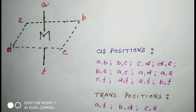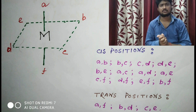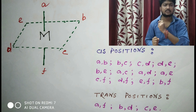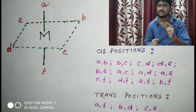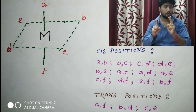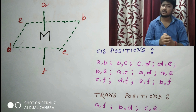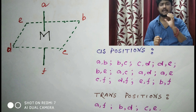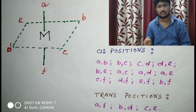When a metal is connected to six ligands, then the compound will be called a six-coordinated compound. Here, the metal is connected to six ligands: A, B, C, D, E, and F. When two groups lie at an angle of 90 degrees, the isomer will be called a cis isomer. When two ligands lie at an angle of 180 degrees, the isomer will be called a trans isomer.